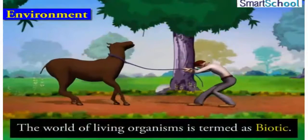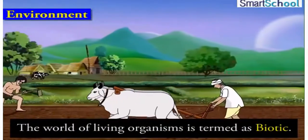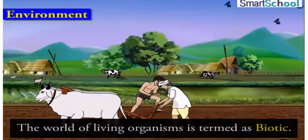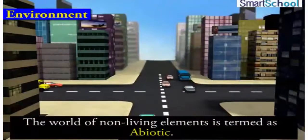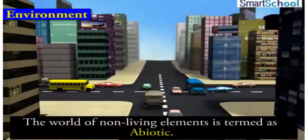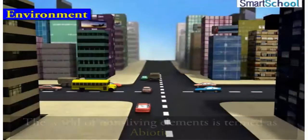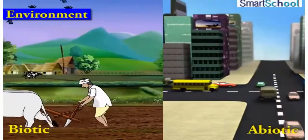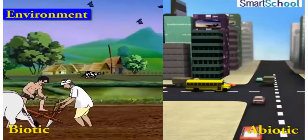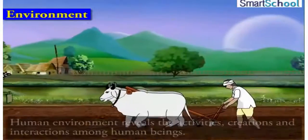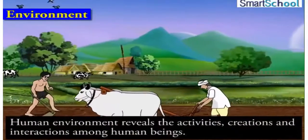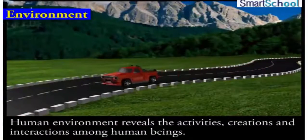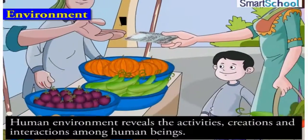The world of living organisms is termed as biotic. The world of non-living elements is termed as abiotic. While the natural environment refers to both biotic and abiotic conditions existing on the earth. Human environment reveals the activities, creations and interactions among human beings.